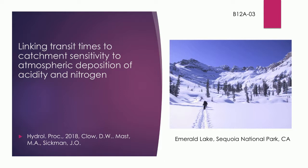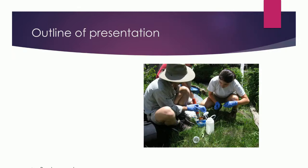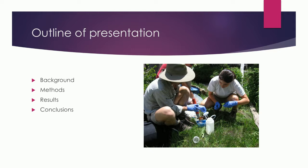For acidity, we're really talking about buffering by mineral weathering reactions. For nitrogen, there are a host of processes, but I'm lumping them under nitrogen uptake or assimilation. How does the hydrology relate to the ability of the watershed to buffer acidity and take up nitrogen? This paper was published in Hydrologic Processes this year, so if you want more details, you can go there.